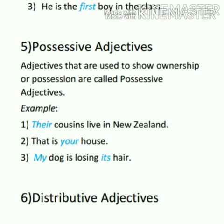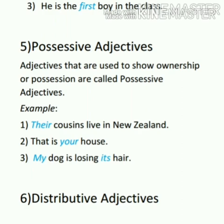The next type is possessive adjectives. Adjectives that are used to show ownership or possession are called possessive adjectives. For example: their cousins live in New Zealand — 'their' tells us whose cousins they are; that is your house; my dog is losing its hair. Possessive adjectives include your, my, his, her, its, their, and our.